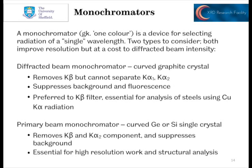Another component to discuss at this stage is monochromators. The word monochromator comes from Greek for 'one colour' and it's a device for selecting radiation of a single wavelength. There are two different types available here in the lab. Diffracted beam monochromators are fitted to all our D5000 instruments. These remove K-Beta radiation and suppress background fluorescence, so they really tidy up our data. They don't separate out K-Alpha-1 and K-Alpha-2 radiations — you still have both wavelengths present — but you do get rid of most or all of the K-Beta. If you're looking at iron-rich samples like steel, those would fluoresce with copper radiation, and the diffracted beam monochromator will get rid of that fluorescence. Secondary beam monochromators tend to be a little more effective than a K-Beta filter, so they tend to be preferred.